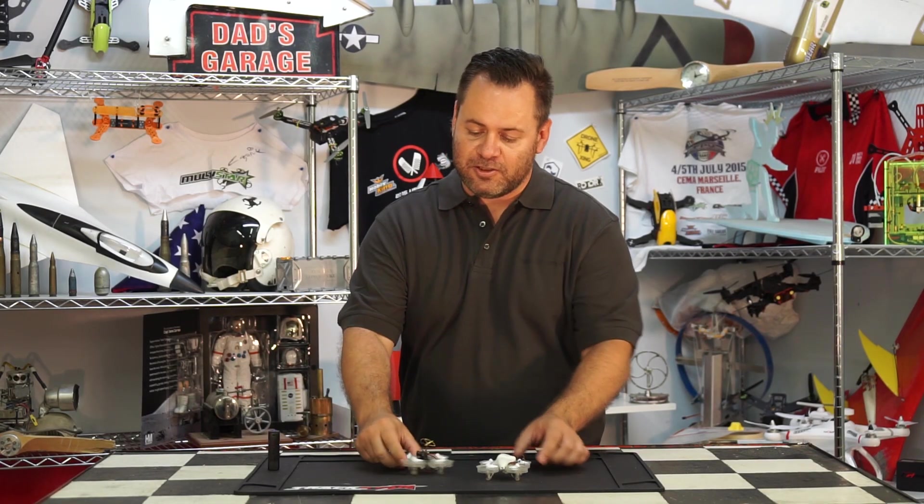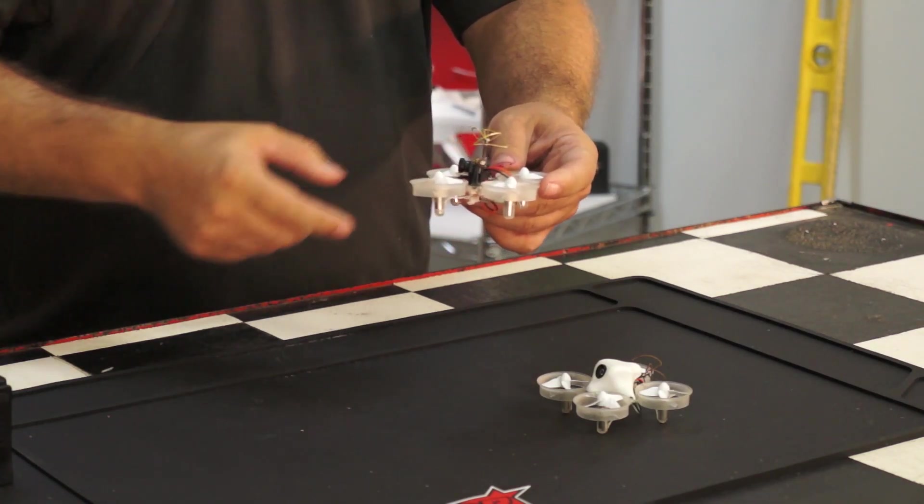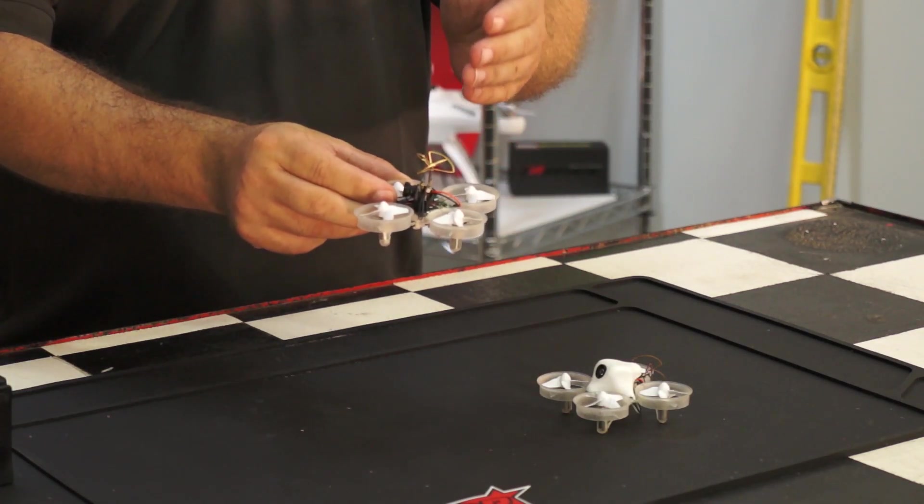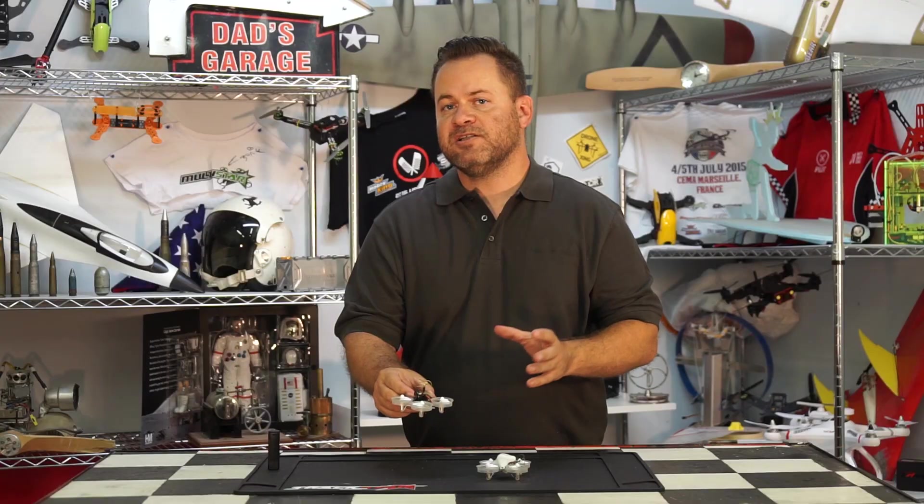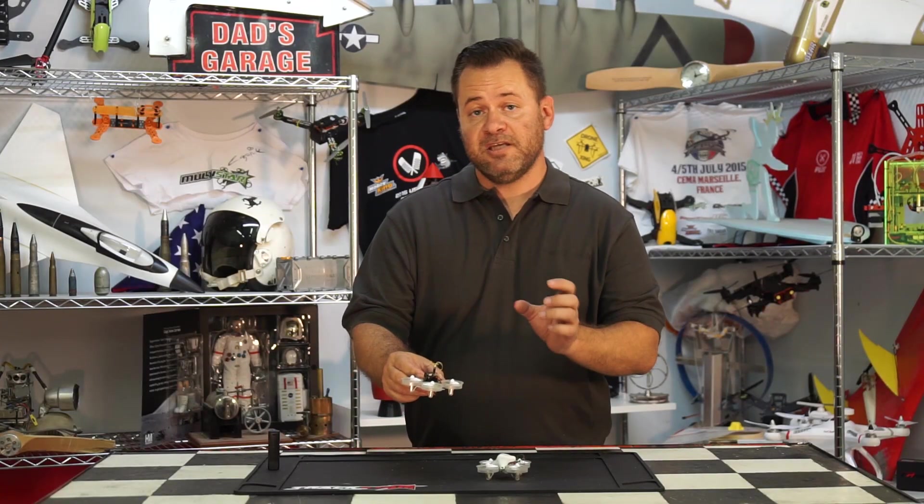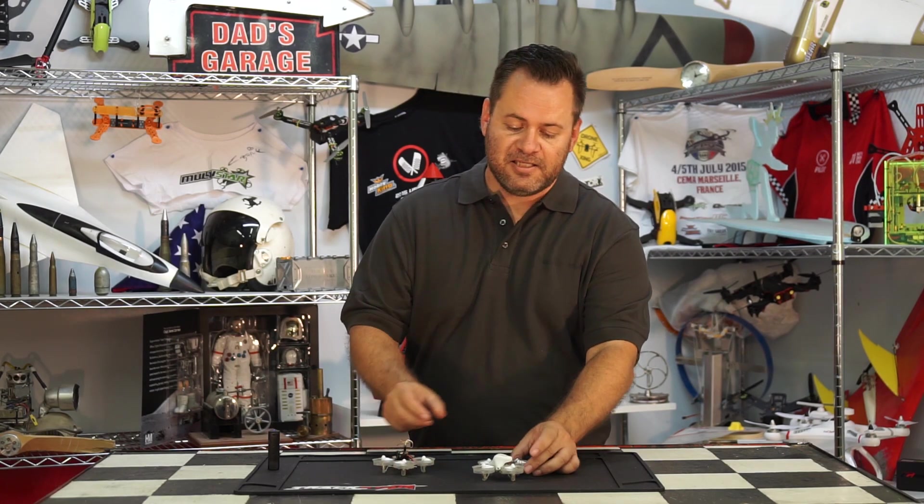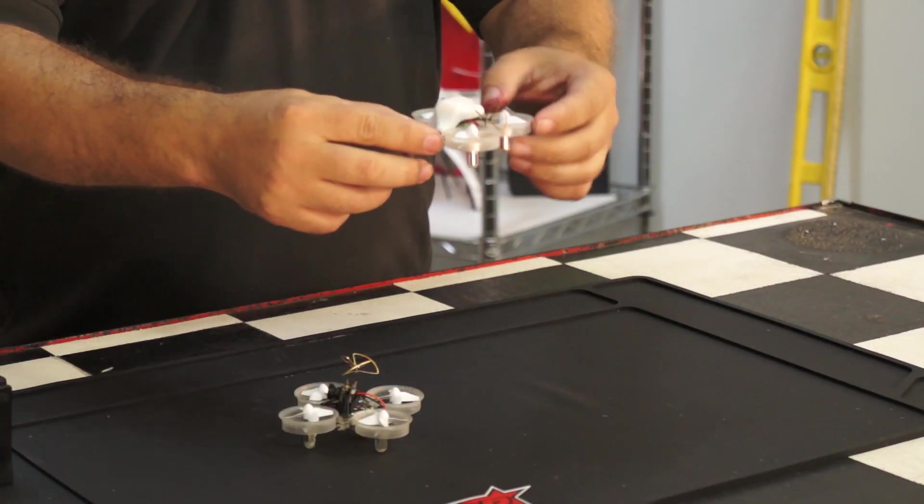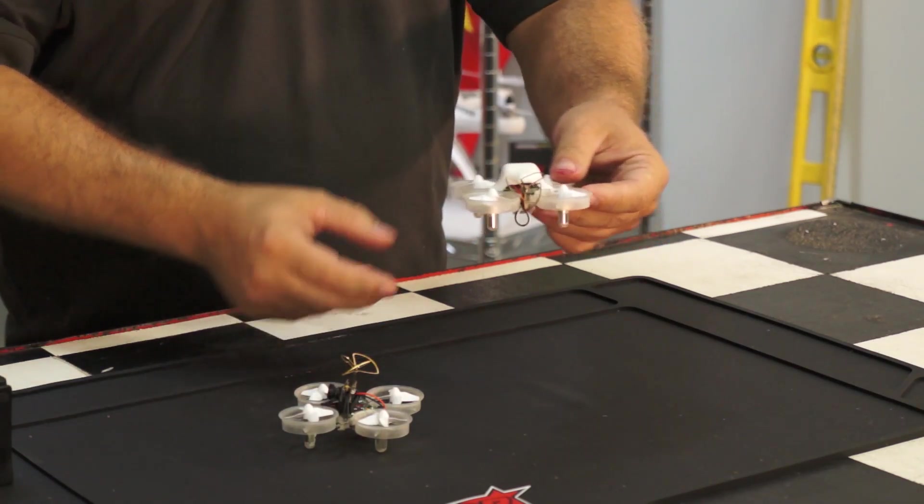The major modification is to the VTX camera module. This one's the Quantum Elite and what I do is actually separate the VTX from the camera. The modification takes about 15 minutes and allows you to remote mount the VTX portion of the camera module. In this case, what I did was just rotate it back and allows the antenna to be protected between the rear nacelles.